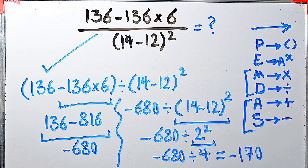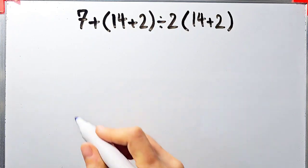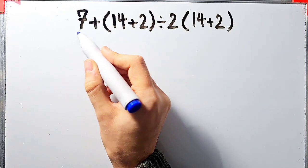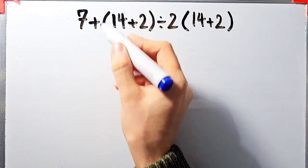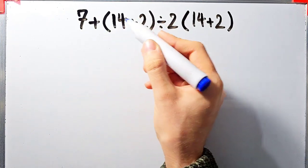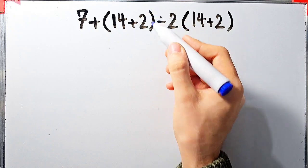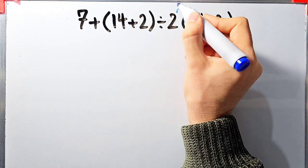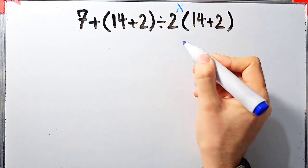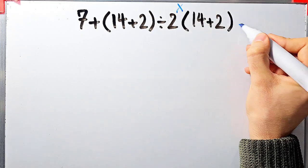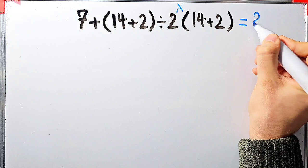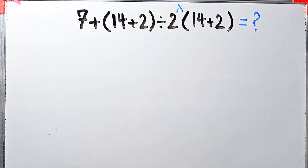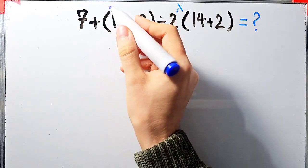Let's solve another question about PEMDAS rule. In this question we have: 7 plus open parentheses 14 plus 2 close parentheses, divided by 2, then times open parentheses 14 plus 2 close parentheses. What is the value of this expression?